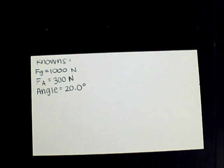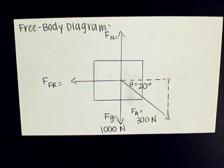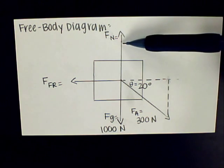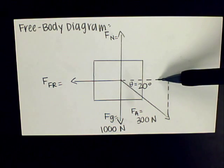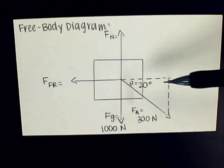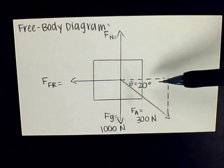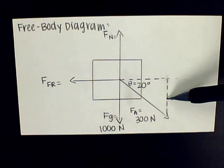We have to list our numbers. We have the force of gravity, which is 1,000 newtons, the force applied, which is 300 newtons, and an angle of 20.0 degrees. Now we have to see what is left unknown. We do not know the normal force, the force of friction, and the components of the force applied — the force applied in the x direction and the force applied in the y direction.